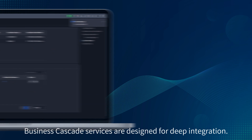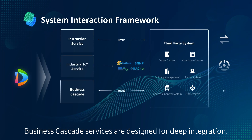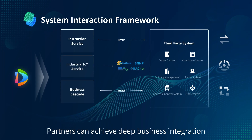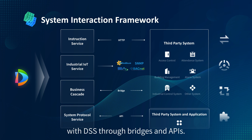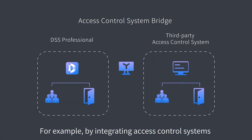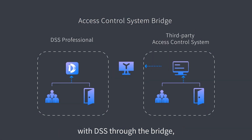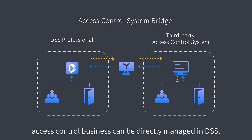Business Cascade Services are designed for deep integration. Partners can achieve deep business integration with DSS through bridges and APIs. For example, by integrating access control systems with DSS through the bridge, access control business can be directly managed in DSS.